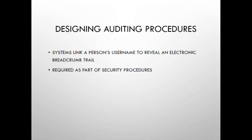Periodically the security officer should examine each employee's access trail within the EHR system, using a person's username to reveal an electronic breadcrumb trail, as required by security procedures. If you're not supposed to be somewhere in the system, don't go there — they can figure out who's been where and why. If a nurse asks you to log on somewhere you're not authorized, you need to say, 'I'm sorry, I'm not allowed to go there.'